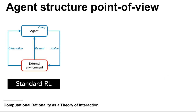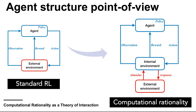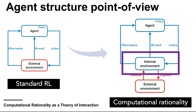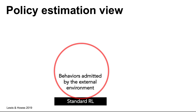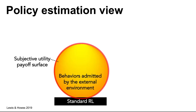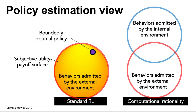If you're familiar with reinforcement learning from the machine learning side, the main difference is the internal environment. In standard reinforcement learning, the agent's policy is constrained only by the external environment, and we use RL to find the policy that maximizes the agent's subjective payoff. By contrast, in computational rationality we are also bounded by the agent's internal environment, and the emergent behaviors can be very different between these two approaches.